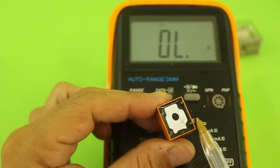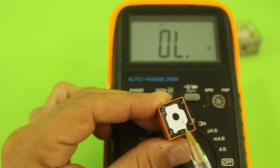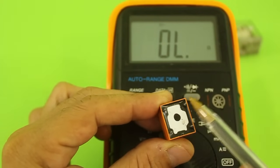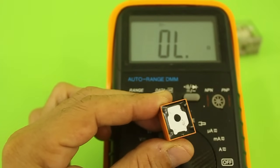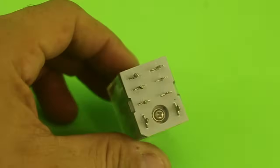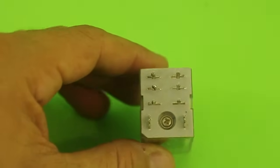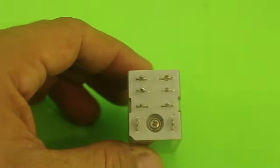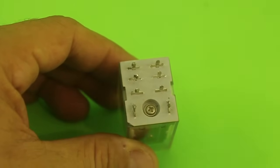These two are the coil contacts, the common, normally closed and normally open. Some relays such as this one are more complicated because we have two sets of contacts.